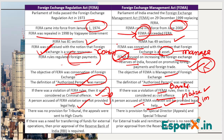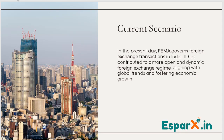So these are the main differences between FERA and FEMA. In one word, we can say that FERA was very strict, whereas FEMA was more flexible — not completely flexible, but more flexible — which led to an increase in foreign assets. Currently, FEMA governs foreign exchange transactions in India. If you found this video helpful, please like and subscribe to our channel for more concept-related solutions. Thank you.